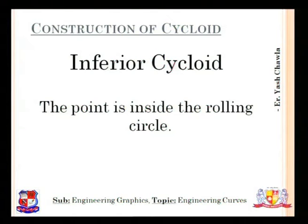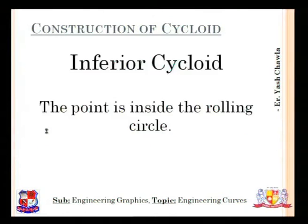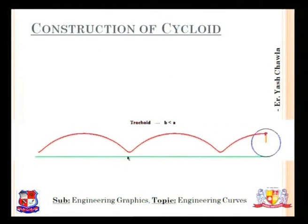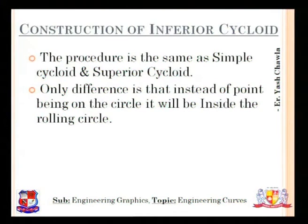Moving on to an inferior cycloid: this is the point which is inside the rolling circle. By now the concept should be very clear. As you can see, the cycloid — the point — intersected the directing line and did not cross it. For a superior cycloid the curve intersected and crossed across the directing line, and for an inferior cycloid the curve will never touch the directing line.